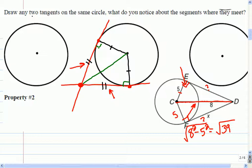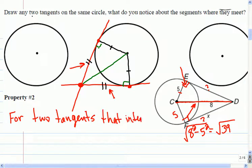Do you want me to reword the second property? Okay. For two tangents that intersect a point, I'm going to call it P, outside the circle. Must be outside the circle because the tangents only touch the edge of it, right?